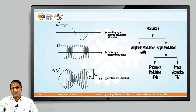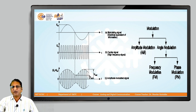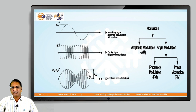Modulation has basically two types: amplitude modulation and angle modulation. In amplitude modulation, the amplitude changes. In angle modulation, there are two subtypes: frequency modulation and phase modulation. Every waveform has three properties: amplitude, frequency, and phase.